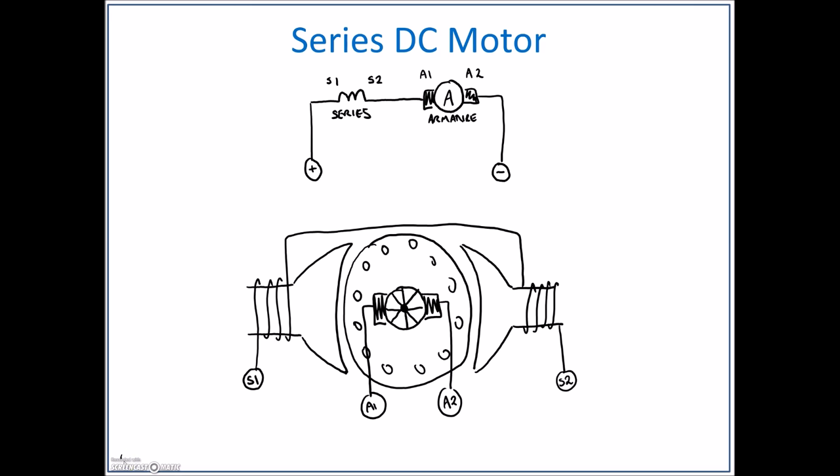Now let's see how this is going to hook up to our DC source. I put the positive on the left-hand side, so we'll put our positive here. We'll put a negative over here. It looks like I'm going from positive to S1, so I'm going to bring a lead over to S1. Then I've got S2 going to A1. S2 is going to go to A1, and then A2 is going to go back to the negative of the source.